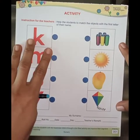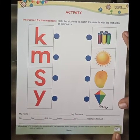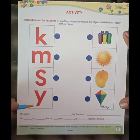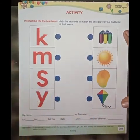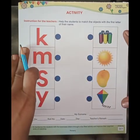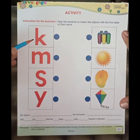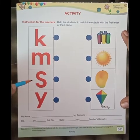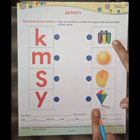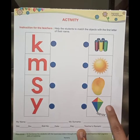Now we will do an activity on page number 301. Students, on this side there are letters and on this side there are pictures. We have to match the object with the first letter of their name. The letters are small k, small m, small s, and small y. The pictures are: Yarn, Sun, Mango, and Kite.